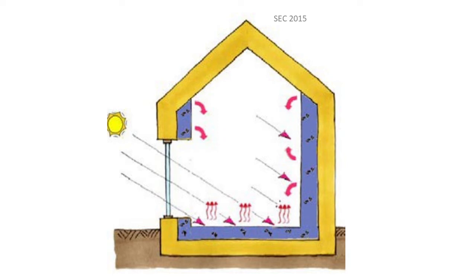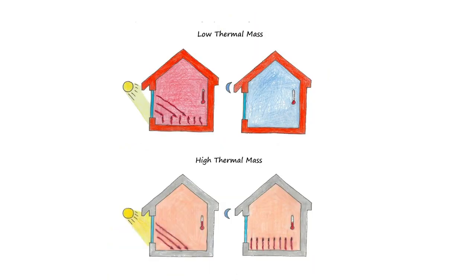To ensure thermal comfort it is very important that the house has a high thermal mass. Thermal mass is a property that enables building materials to absorb, store and later release significant amounts of heat. Materials such as concrete which have a high thermal mass are very important in a passive house as this helps to moderate temperature fluctuations. If a house has a low thermal mass it would be prone to overheating, as is highlighted in this sketch.